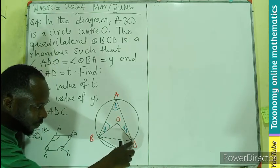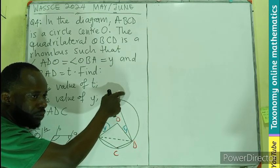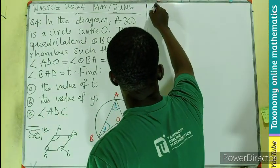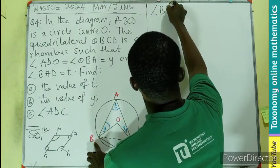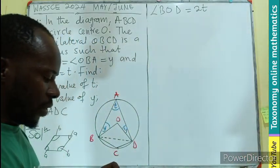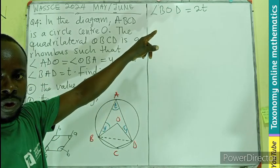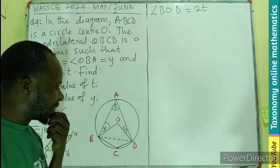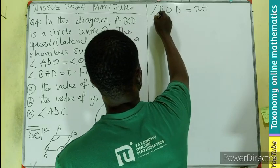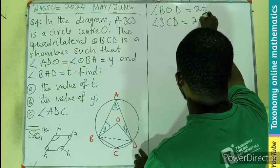The angle at the center is formed by the same arc at the circumference. So the angle BOD equals two times the angle at the circumference. This angle at the center will be 2t, because the angle at the center is twice the one at the circumference. Therefore, angle DCD will also be equal to 2t.